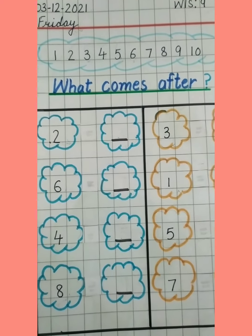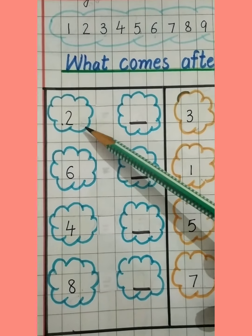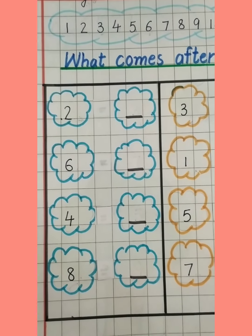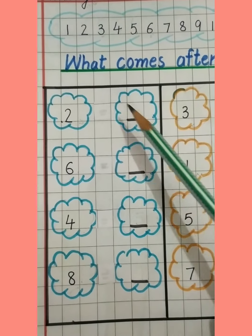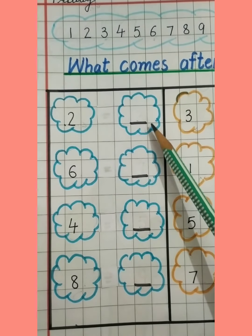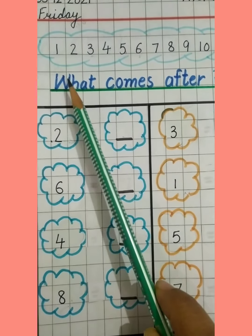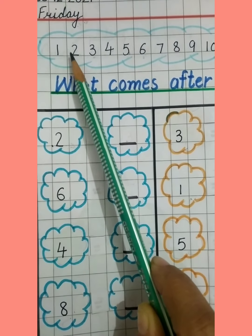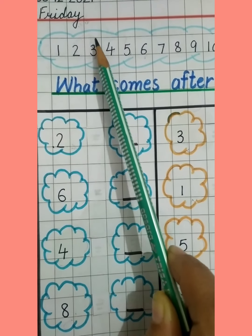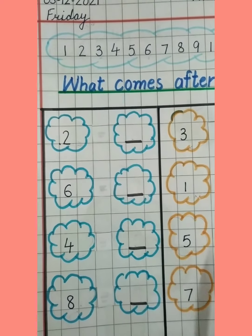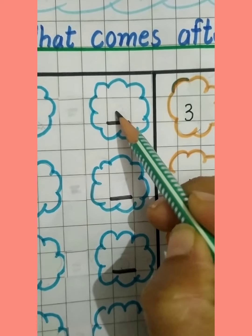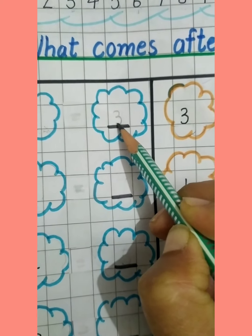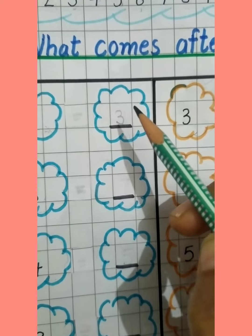Okay children, this is number 2. Now tell me, what comes after 2? 2 ke baad kya aata hai? You can see from the number line: 1, 2, and after 2 is 3. So we have to write 3 here. Hamein yahan par kya likhna hai? Number 3.